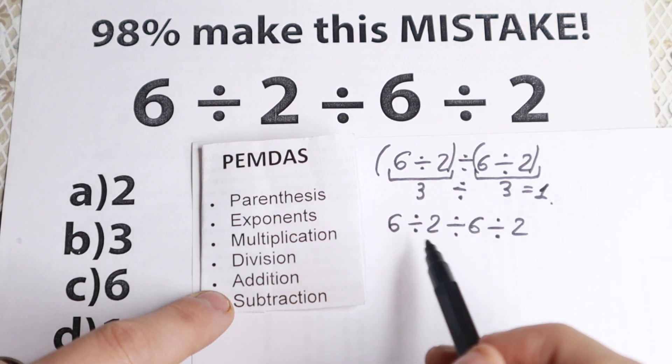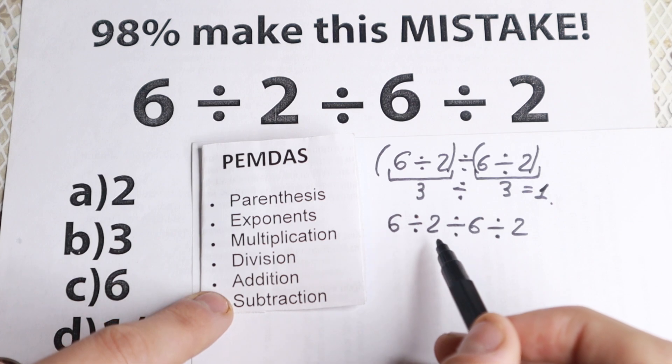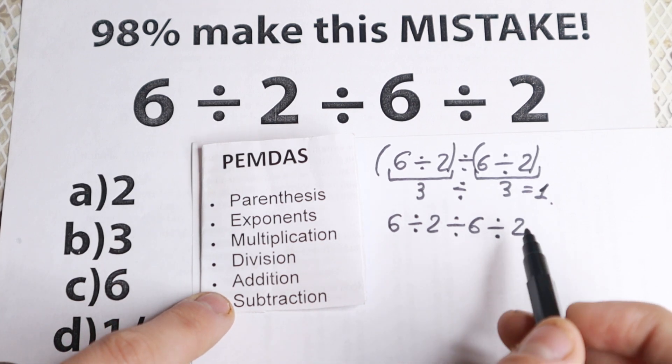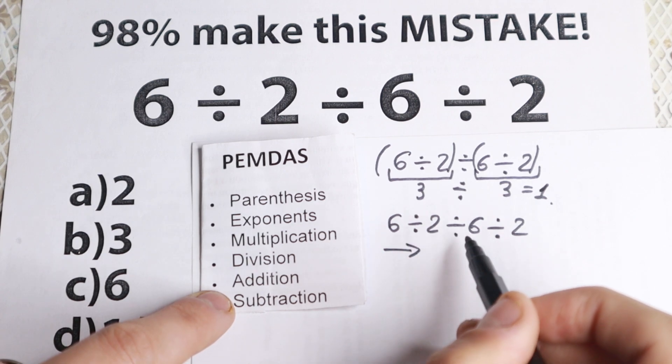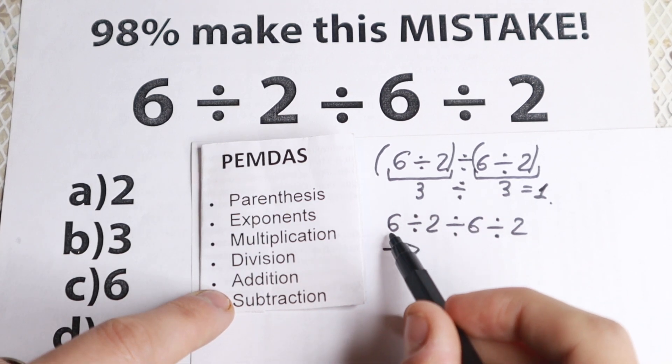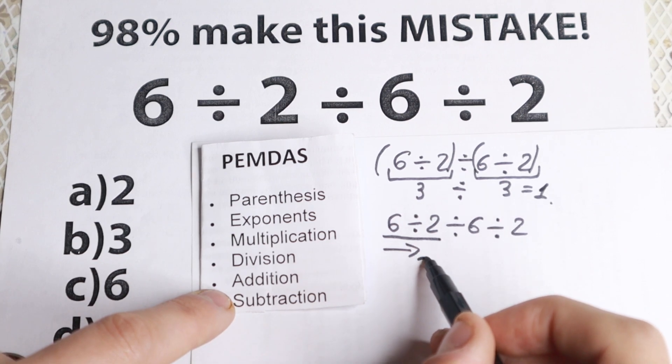We don't have parentheses, we don't have exponents, we don't have multiplication, we will have only division. We don't have addition and subtraction. So PEMDAS order works from left to right. And it's really good, because we start with this division. So 6 divided by 2 equals 3.